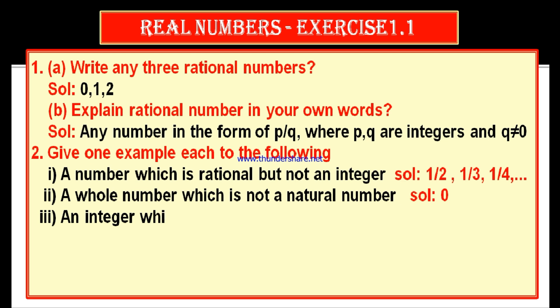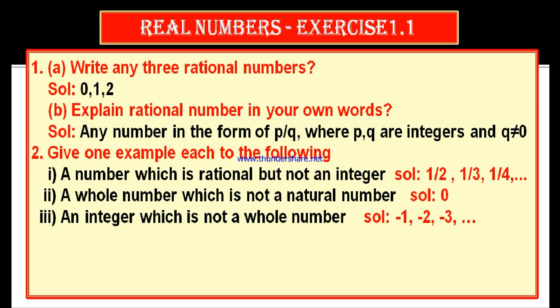Third bit: an integer which is not a whole number. Whole numbers are 0, 1, 2, 3, 4 and so on — that is 0 plus positive integers. Every negative integer is not a whole number. Therefore, write any negative integer as the answer: minus 1, minus 2, minus 3 and so on — these are integers but are not whole numbers.